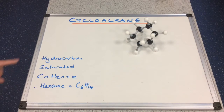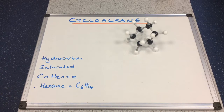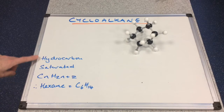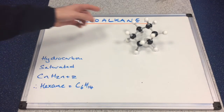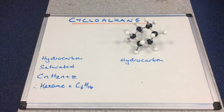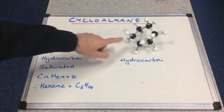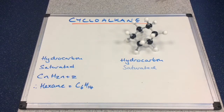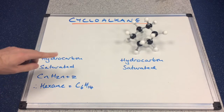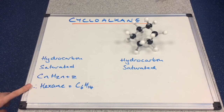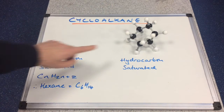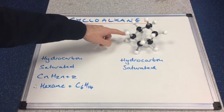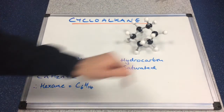Let's run through those four key points to see if they apply to this cyclohexane molecule. Is it a hydrocarbon? Does it contain carbon and hydrogen only? Yes, so it's a hydrocarbon. Is it saturated? Do we have carbon-carbon single bonds? Yes, so it's still saturated. Now let's work out the molecular formula for cyclohexane. We've got six carbons and two, four, six, eight, ten, twelve hydrogens.